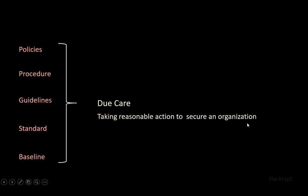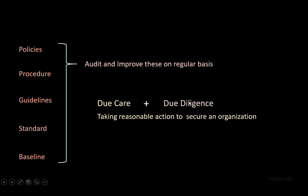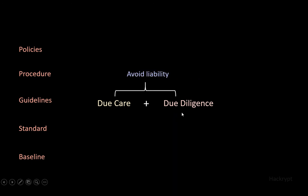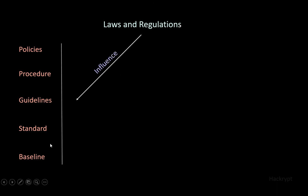Having good policies is a sign of good governance. Having all these in place is a part of due care, which means taking reasonable action to secure an organization. However, having all these is not enough — we have to make sure they are implemented properly by performing audits and improving them on a regular basis. This is called due diligence, also called sustaining due care. These two help to avoid liability in case of an incident. This liability can also arise due to laws and regulations, and in case of negligence the company might have to pay a heavy cost.